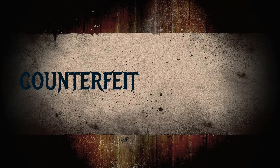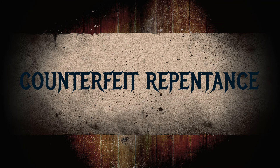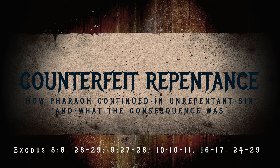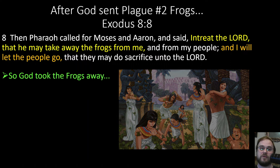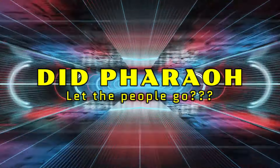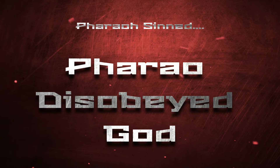Now we'll see what counterfeit or fake repentance looks like, and how Pharaoh continued in unrepentant sin. After plague number two, the frogs, Pharaoh called for Moses and Aaron and said, 'Entreat the Lord that he may take away the frogs from me and from my people, and I will let the people go that they may sacrifice unto the Lord' (Exodus 8). Moses prayed, God took the frogs away. Did Pharaoh let the people go? Nope. Pharaoh disobeyed God and would not let the people go.